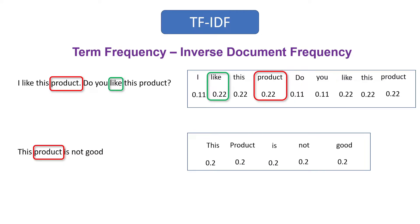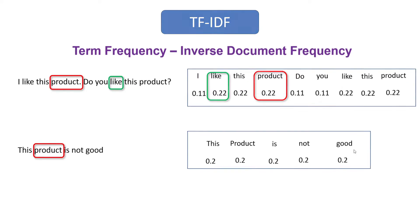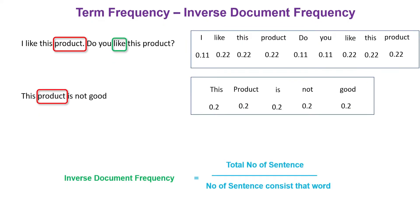What we are expecting from TF-IDF is that the word 'product' should get less weightage because it occurred in all the sentences, whereas the word 'like' should get more weightage because it occurred in only one sentence. But term frequency is missing this. This is where inverse document frequency comes into the picture — it gives low weightage for words which occurred in all or most of the sentences.